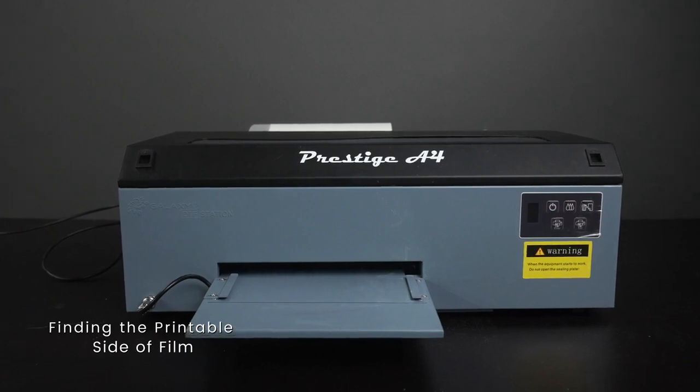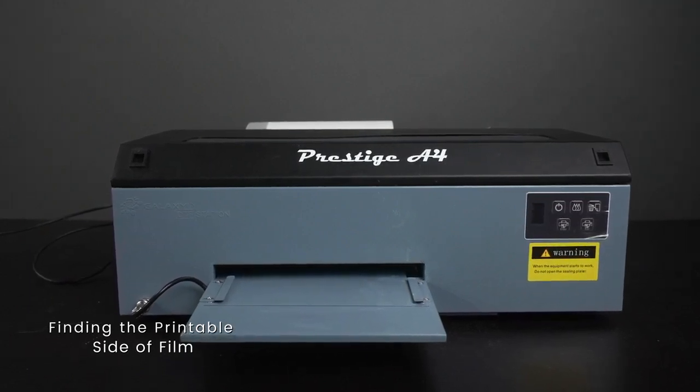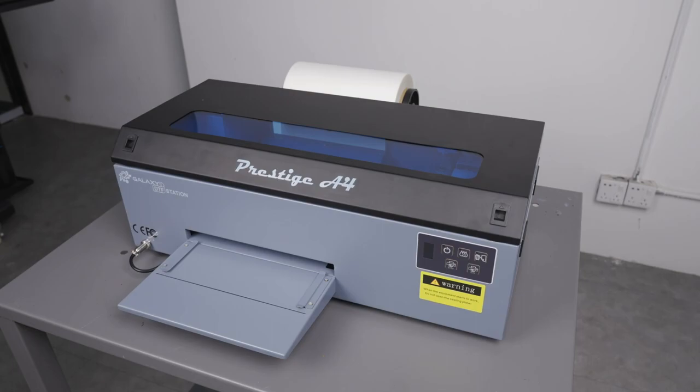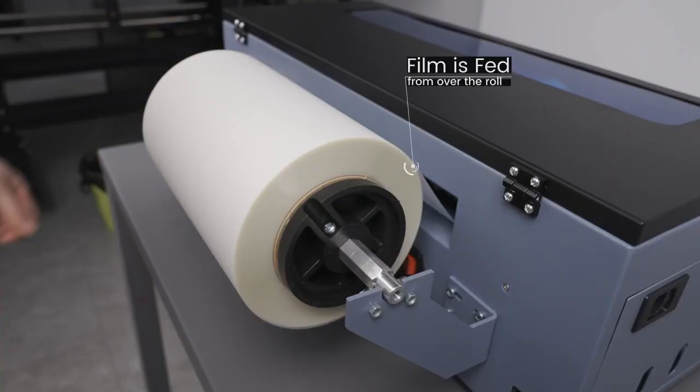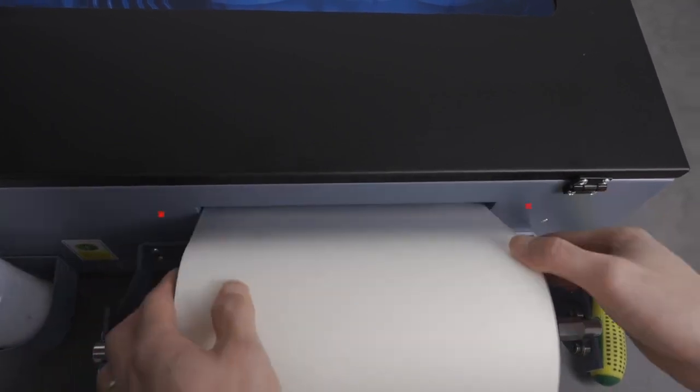In today's video, we will show you how to know what side is the printable side of film. When roll-to-roll printing, you can tell because the printable side will be the outside area. So when loading your film, make sure that the film is being fed over.